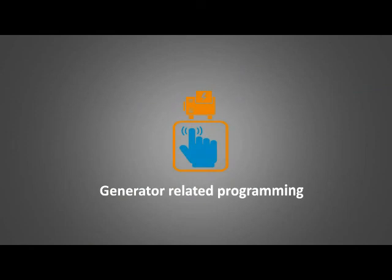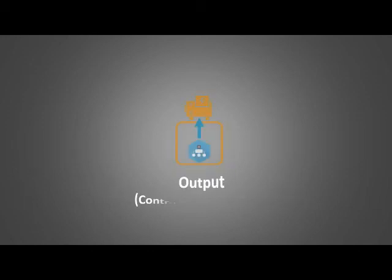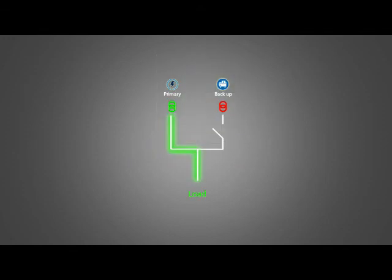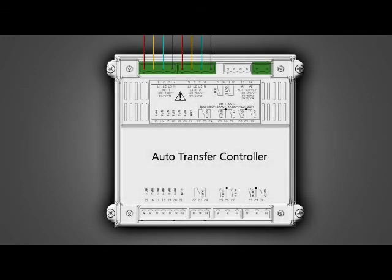Generator related programs: Now let us look at programming related to generators. Output controller to generator — the output types are start and stop. In this scenario it is assumed that utility is the priority source and generator is the secondary source. Output 3 with terminals 23 and 24 is programmed for generator start and stop signals.